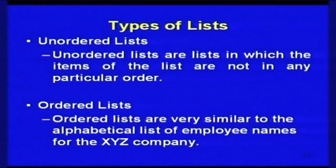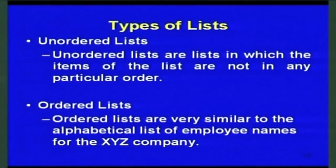When you talk about lists, there are many ways to classify them, but the most important classification is unordered lists and ordered lists. Unordered lists means the elements in the list are not in any particular or sorted order — they could potentially be sorted alphabetically or numerically, but in unordered lists they are not sorted. Ordered lists, on the other hand, are like alphabetic lists of employee names or the rank of students in an exam.